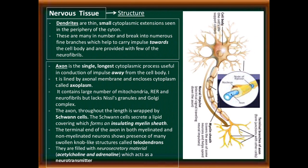Dendrites are thin, small cytoplasmic extensions seen in the periphery of the cytone. These are many in number and break into numerous fine branches, which help to carry impulse towards the cell body. They are provided with few neurofibrils. Axon is the single longest cytoplasmic process, useful in conduction of impulse away from the cell body.